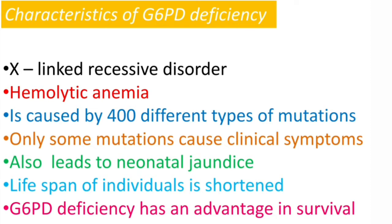Coming to the characteristics of G6PD deficiency: G6PD stands for glucose-6-phosphate dehydrogenase. It is an X-linked recessive disorder that mainly affects males. Hemolytic anemia is the most important feature, and there are 400 different types of mutations seen in the gene which codes for glucose-6-phosphate dehydrogenase.